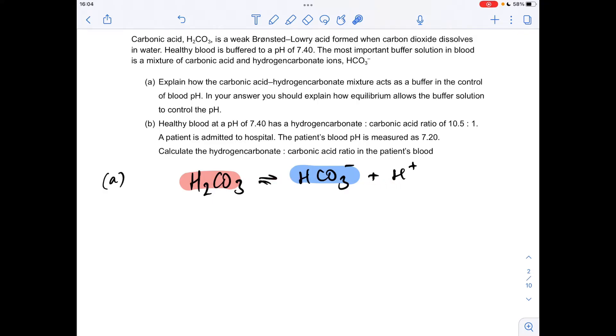Conversely, if hydroxide ions enter the blood, they're going to react with the H+ ions and lower the concentration of H+. The reservoir of carbonic acid dissociates more and puts the H+ ions back into the system, maintaining the pH at around that healthy level of 7.4.